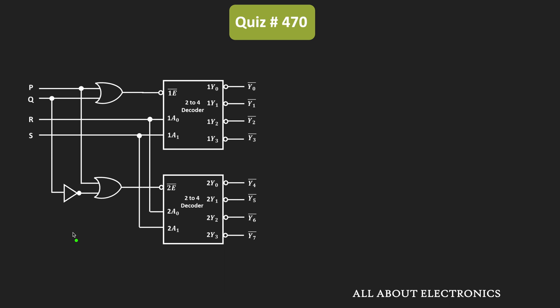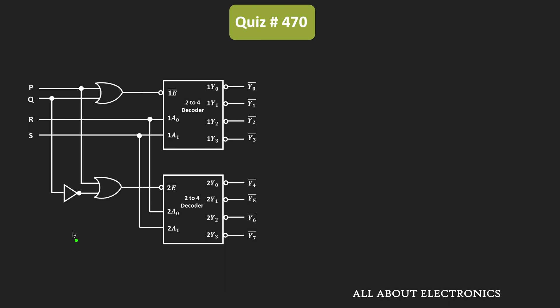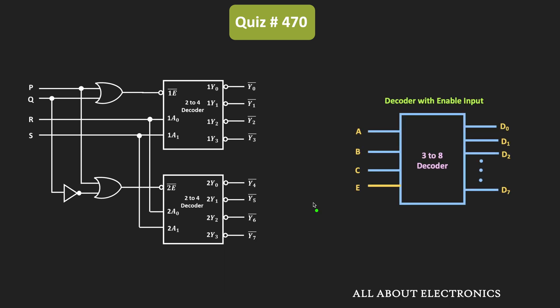This circuit consists of two decoders and a few logic gates — these decoders are used as the demultiplexer. On the main channel, in one of the videos on demultiplexers, I discussed how to use a decoder as a demultiplexer. To design a 1-to-8 demultiplexer, we require a 3-to-8 decoder, and in that 3-to-8 decoder, we need to apply the demultiplexer input at the enable pin. So if we apply DIN at the enable pin of a 3-to-8 decoder, it will work as a 1-to-8 demultiplexer.